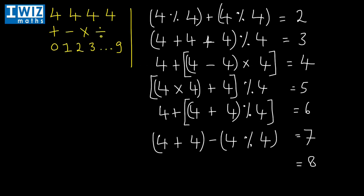Getting to eight: eight is just four plus four, which is already eight. So we need to subtract zero. We can do minus four minus four, which is zero. So eight minus zero is eight — or equally, eight plus zero is also eight.